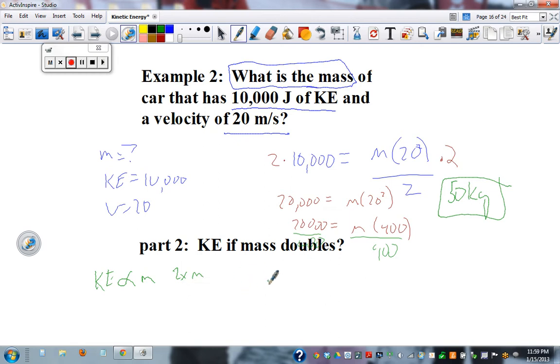So if we have 100 times 20 squared divided by 2 equals, we've now doubled, oops sorry, doubled the mass. But we kept everything else the same. 100 times 400 divided by 2.